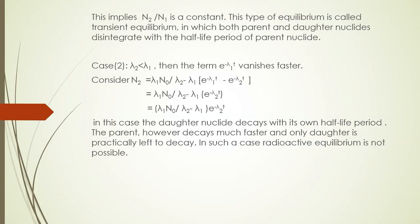In the second case where λ₂ < λ₁, the term e^(−λ₁t) vanishes faster. Considering the successive disintegration equation and applying the above condition, we get: N₂ = λ₁N₀ / (λ₂ − λ₁) × e^(−λ₂t). In this case, the daughter nuclei decays with its own half-life period. The parent decays much faster and only the daughter is practically left to decay. In such cases, radioactive equilibrium is not possible.